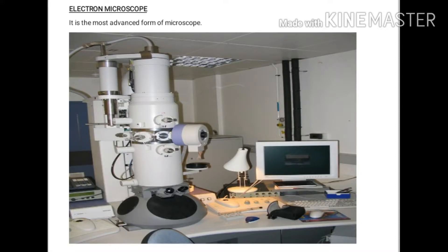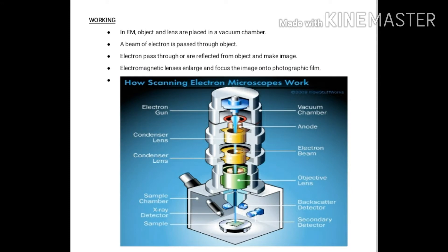Electron Microscope — it is the most advanced form of microscope. Yeh microscope ki bohat jadeed qisam hai. Jaise ke aap ko diagram mein nazar aa rahi hogi, is mein electrons ke zariye hum specimen ko observe karte hain aur magnified image obtain hota hai. Ab is ki working samjhenge.